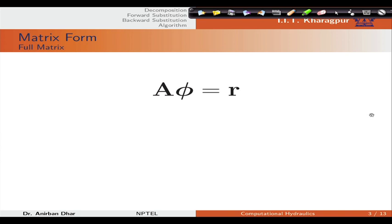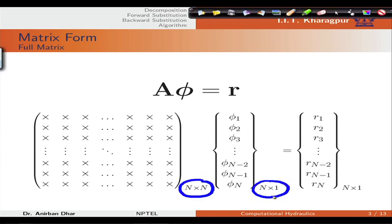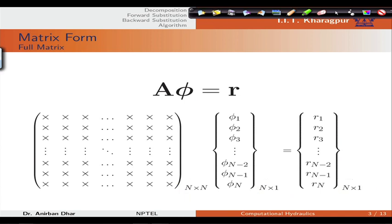We already know the matrix form: A is our constant coefficient matrix, which is a square matrix; phi is our variable vector; and R is the right-hand side vector. We have an n×n square matrix, an n×1 variable vector, and an n×1 right-hand side vector. These are compatible matrices.